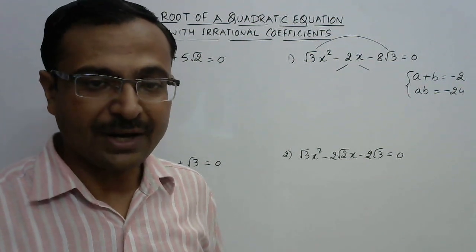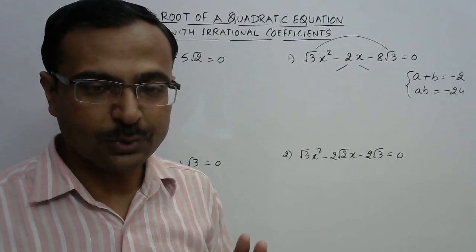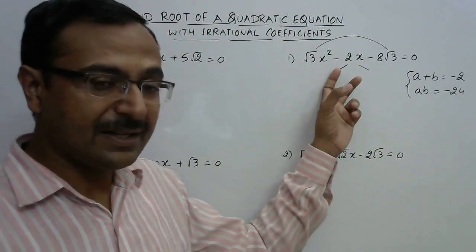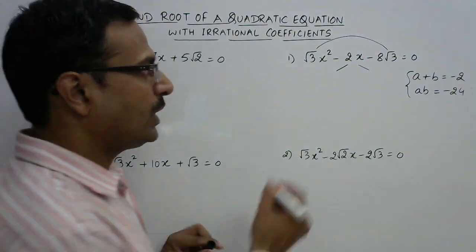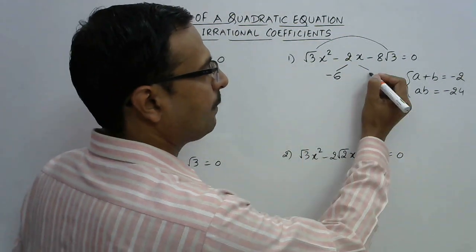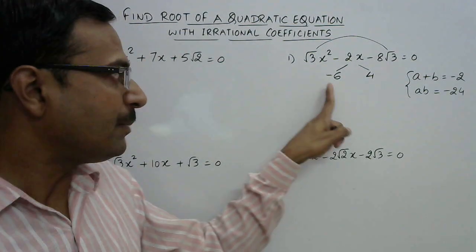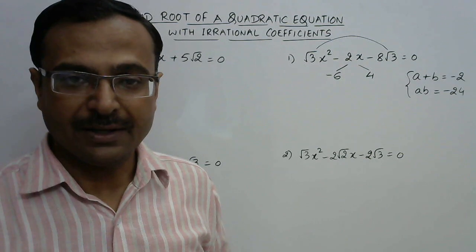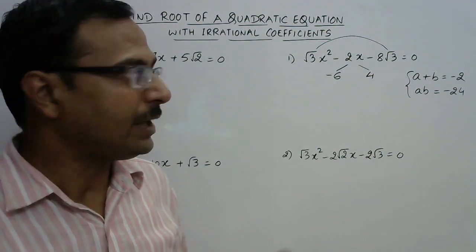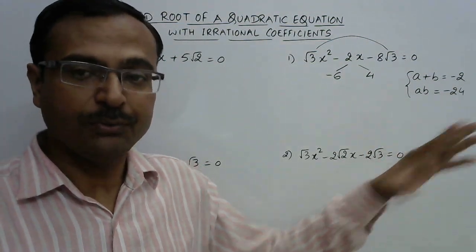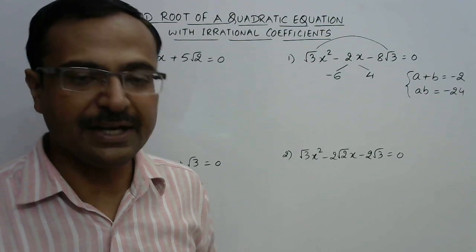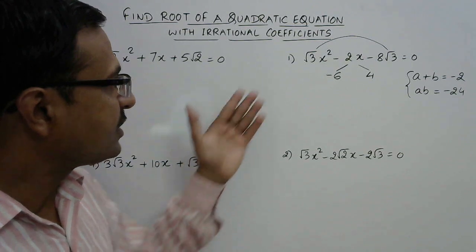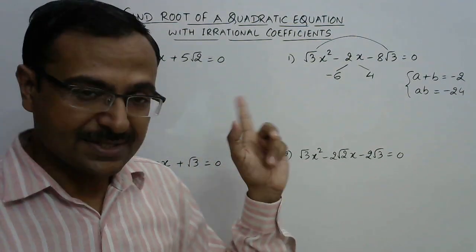After identifying 6 and 4, we need to think about the sign. We need the sum as -2, so it has to be -6 and +4, because -6 + 4 = -2 and (-6) × 4 = -24. So these are the two numbers required for finding the solution.